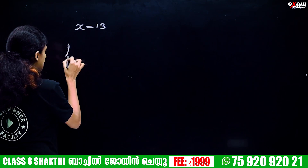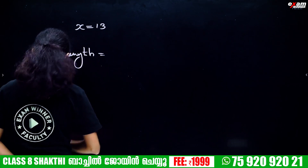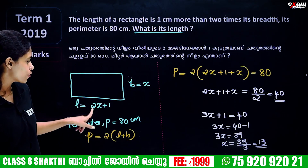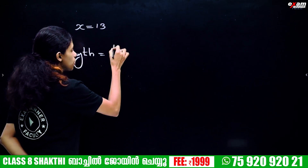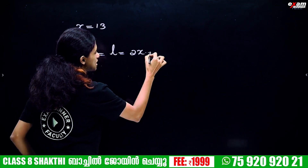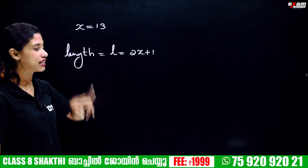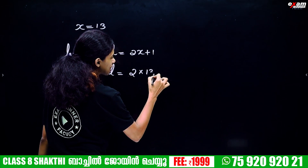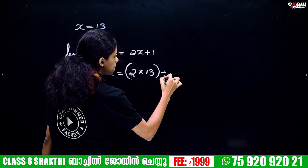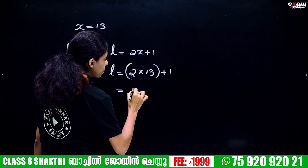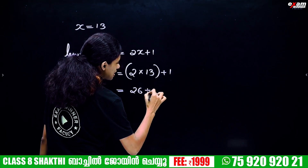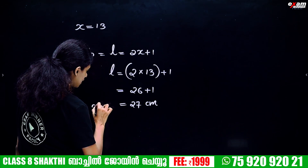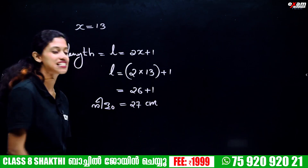Now we find the length. Length L equals 2 into x plus 1. With x equals 13, length equals 2 into 13 plus 1, which is 2 into 14, equals 27 cm. So the length is 27 cm.